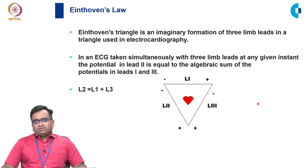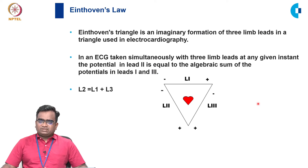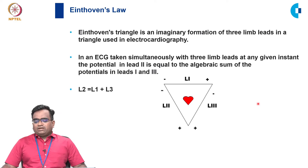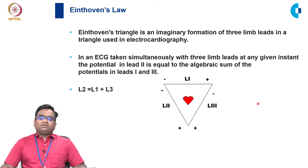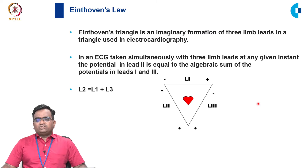Einthoven's Law: Einthoven constructed an imaginary triangle and assumed the heart is at its center, with the three limb leads connected at each end. If an ECG is taken simultaneously with three limb leads at any given instant, the potential of one lead equals the arithmetic sum of the other two. Generally stated: Lead 2 equals Lead 1 plus Lead 3. This is called Einthoven's Law.